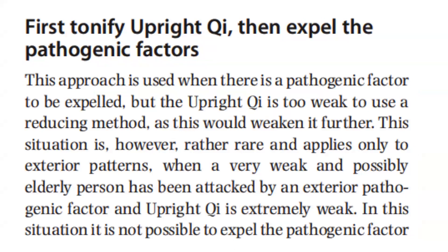The first approach — tonify upright chi, then expel the pathogenic factors — is used when there is a pathogenic factor to be expelled, but the upright chi is too weak to use a reducing method, as this would weaken it further. This situation is, however, rather rare and applies only to exterior patterns.